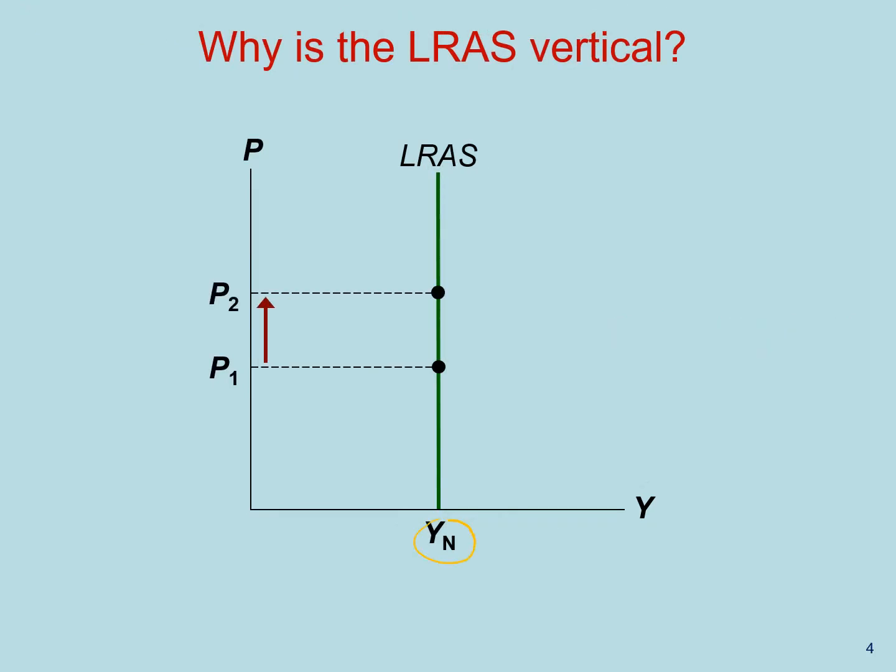Because YN is determined by the economy's stocks of labor, capital, natural resources, and our level of productivity, an increase in the price level does not affect potential output. This is the graphical representation of the classical dichotomy in the long run.